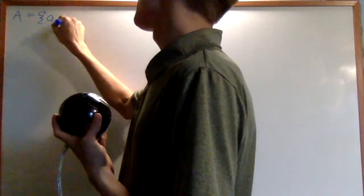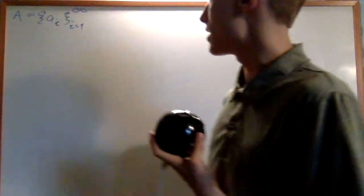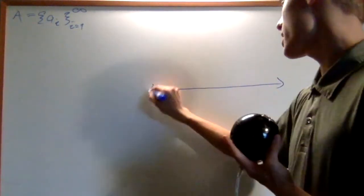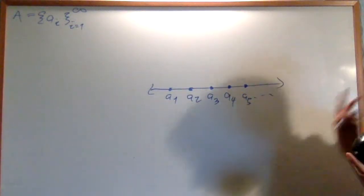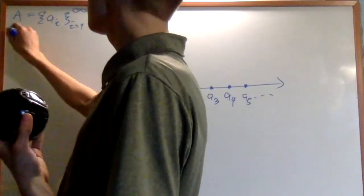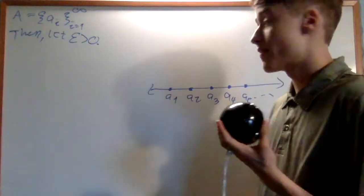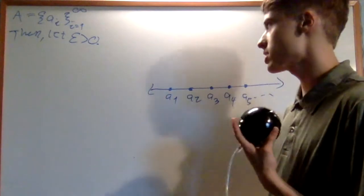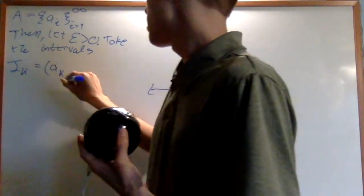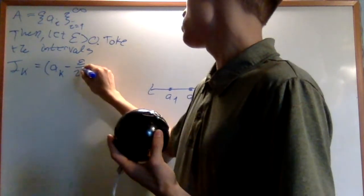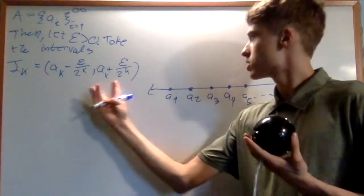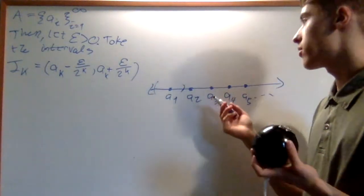Let's say A is going to be the set of a_i for i equals 1 to infinity. This is just from the definition of countable — we can list them using the natural numbers. This is the real line; they do not have to be in order. Then let ε be greater than zero. Take the interval I_k to be the open set from a_k minus ε over 2^k up to a_k plus ε over 2^k. So this is just putting an open interval of radius ε over 2^k around each point.